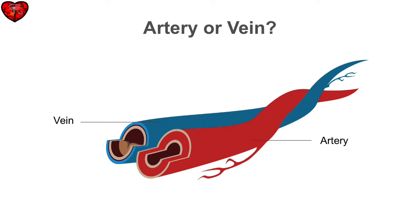There are anatomic variants that can throw off your landmarks, and unlike this cartoon, arteries are not always red, and veins are not always blue on ultrasound. After this lesson, you'll be able to tell the key differences between an artery and a vein.